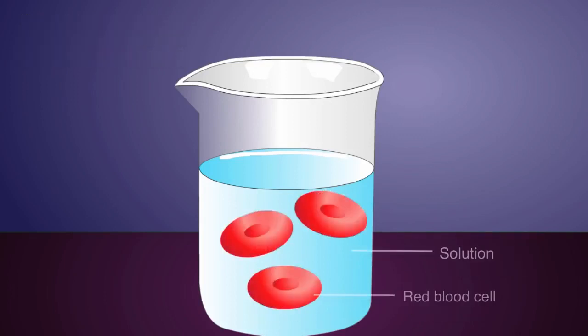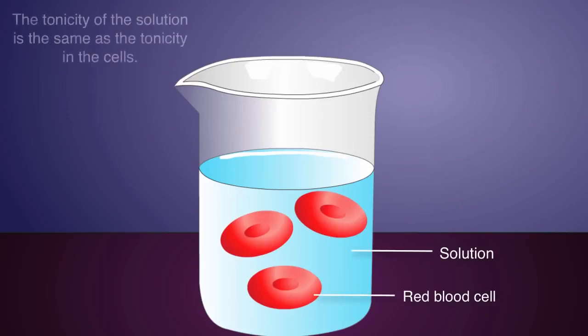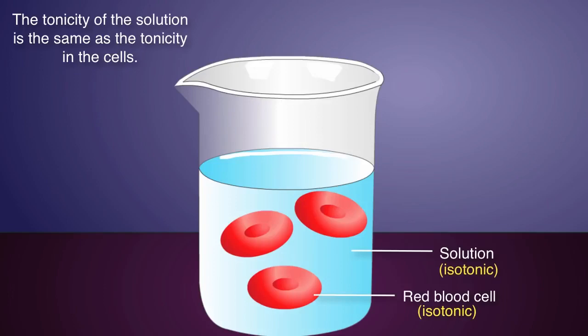If the red blood cells are placed in a beaker whose contents match the tonicity within the cells, then there is no net gain or loss of water. The environments within the beaker and inside the cells are said to be isotonic, or the same.